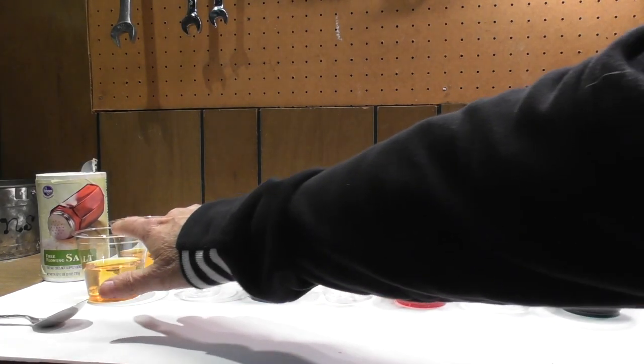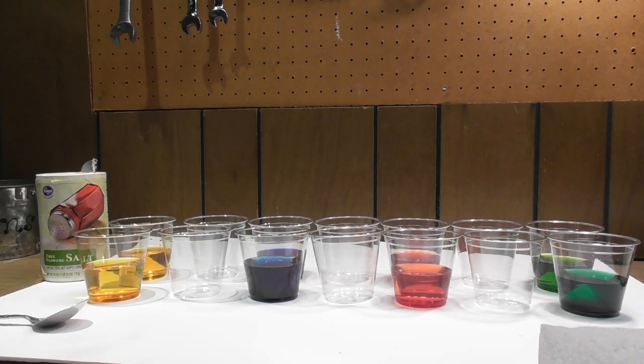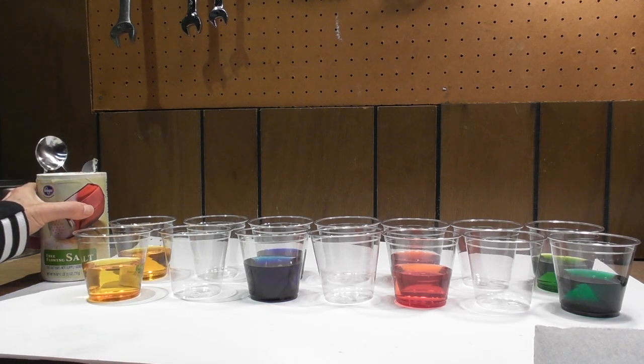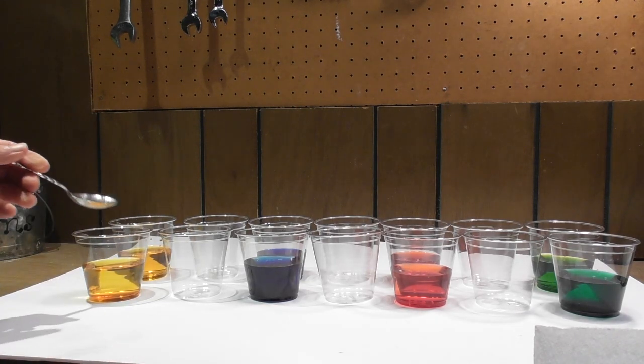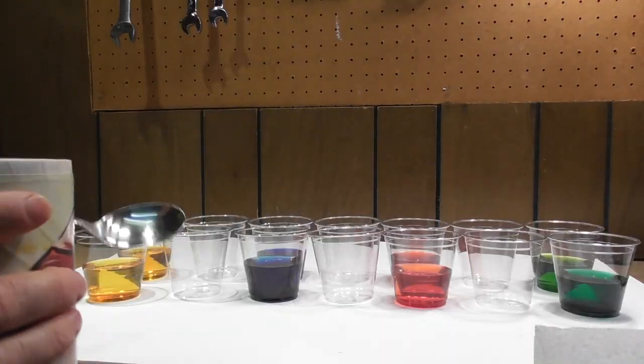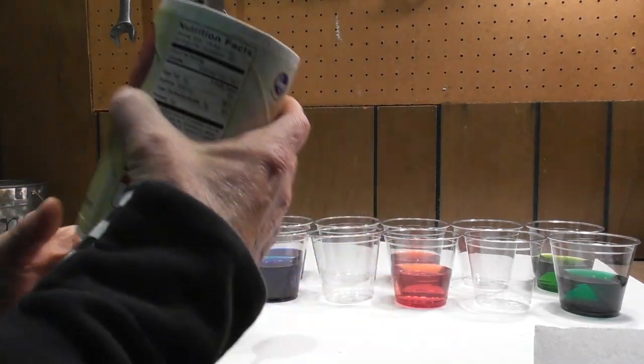Now in order to introduce the independent and dependent variable, we're going to have two types of water. We're going to have fresh water in the front and in the back we're going to have salt water. I'm just going to put some salt in it.